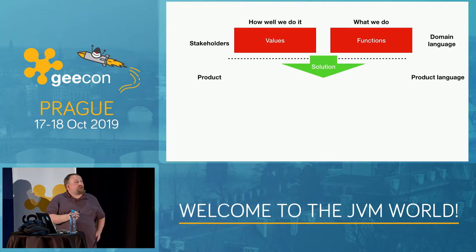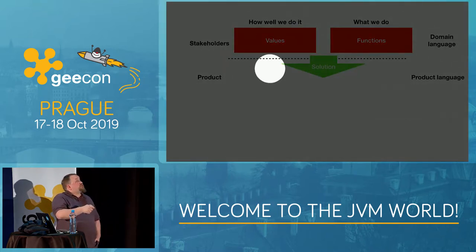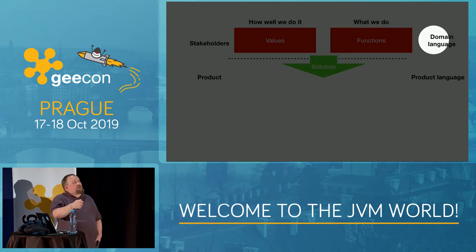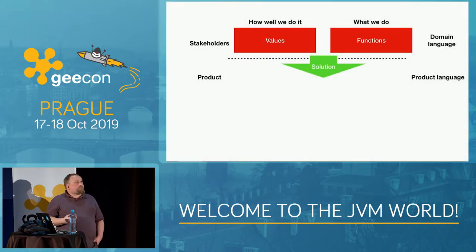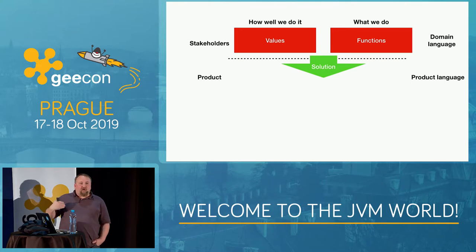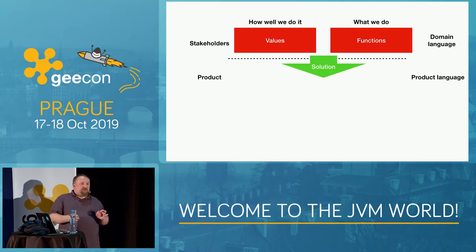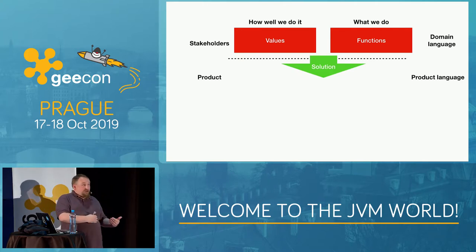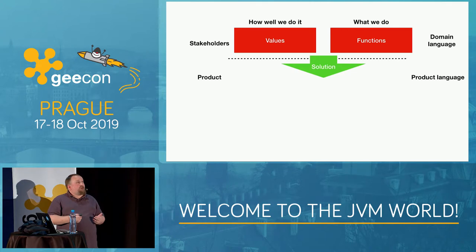There is also an important language distinction. When talking to stakeholders, you should use the domain language — the problem language — and not talk about your product that much. Whereas when you analyze the product, you use the product language. I once sat a whole day with a partner of ours asking all sorts of questions about how they work without even saying the name of our product, because the whole point was that I understood in deep detail how they work and what problems they're solving.